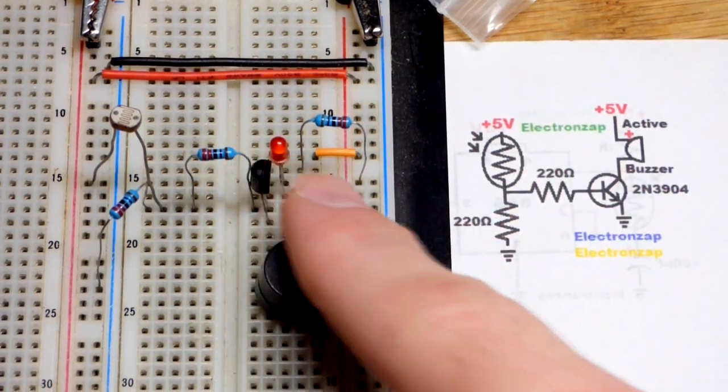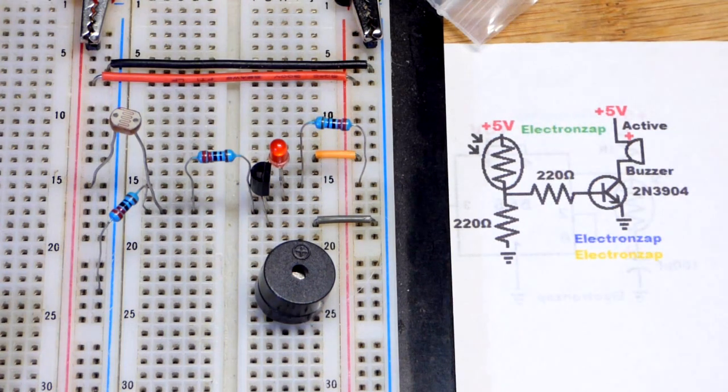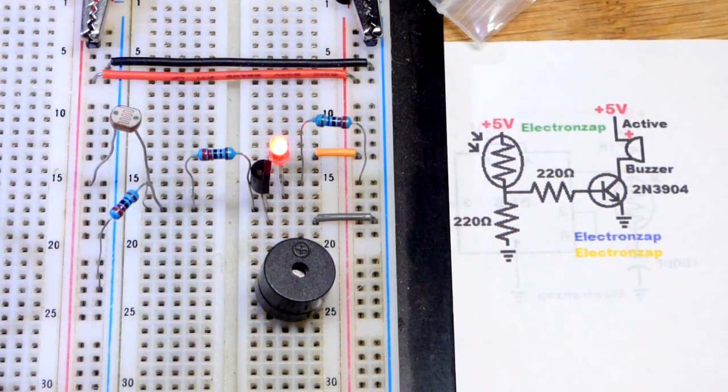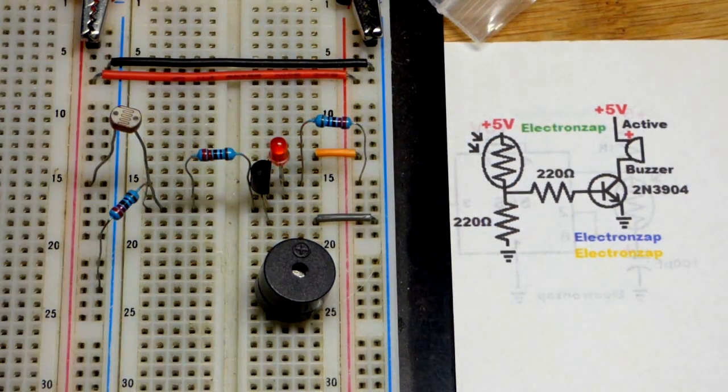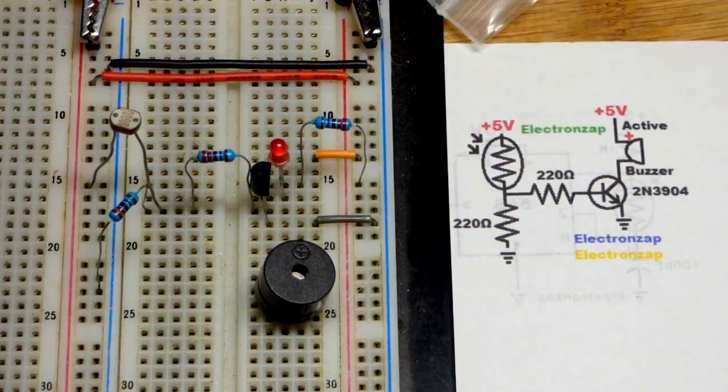To begin with, I set this up with the light dependent resistor because the active buzzer is really annoying. But there you can see when I get bright light on the light dependent resistor, we get the red LED to light up.